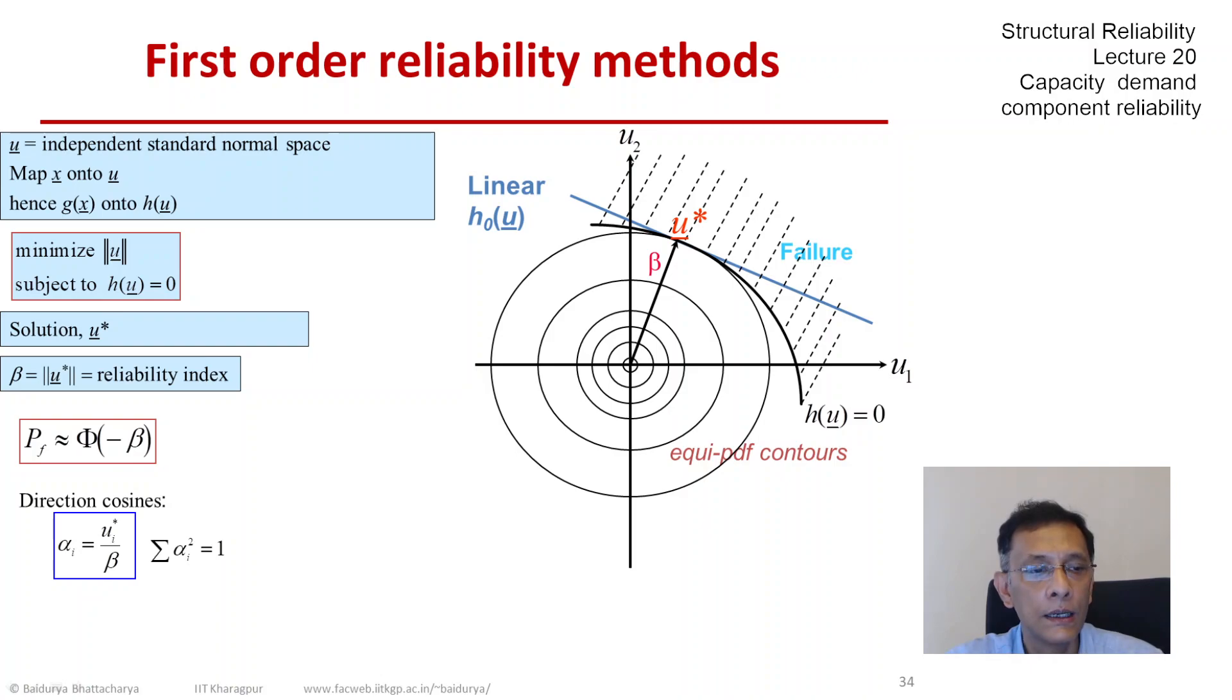It is also quite helpful to define the direction cosines, which you see on the screen. They are also known as the sensitivity of each variable u_i. Basically what that tells you is what is the change in reliability index or reliability for an incremental change in that particular u_i.